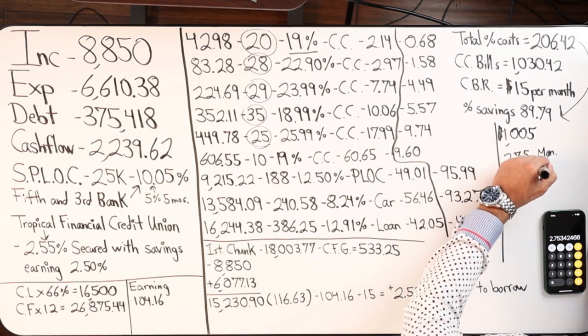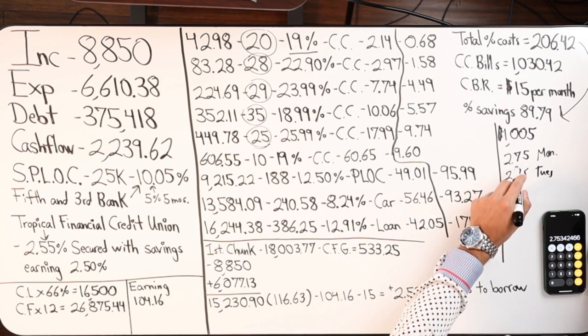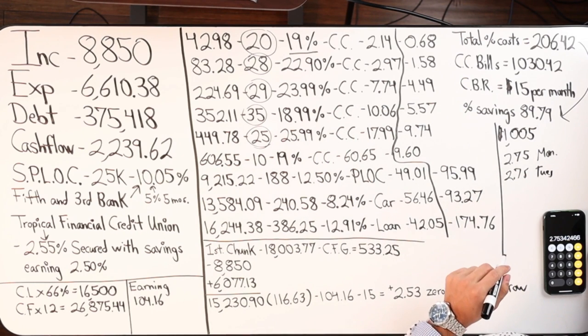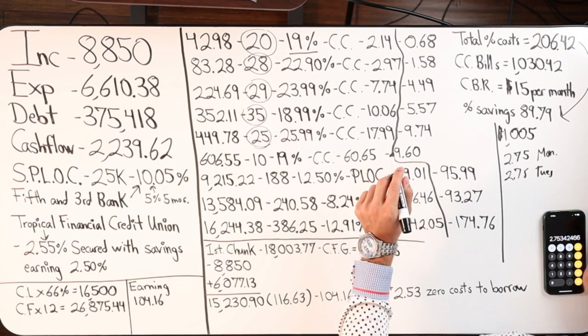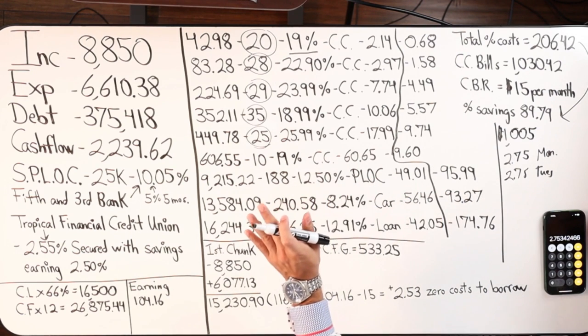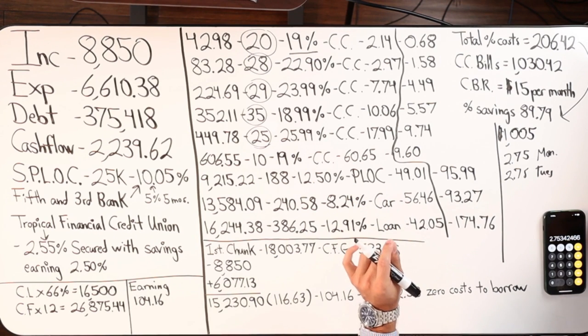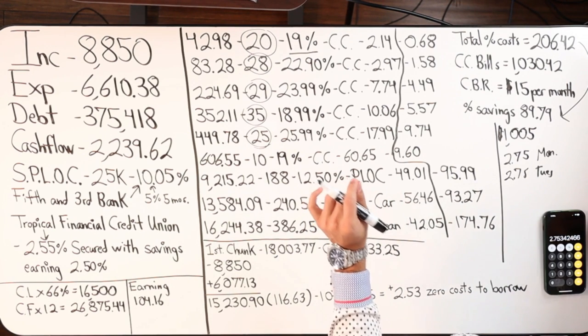So, on Tuesday, I'll owe $2.75 again. This is different than credit cards. A credit card, for the most part, if I'm understanding this correctly—I might be wrong here, but I know this is especially true with cash advances on a credit card.